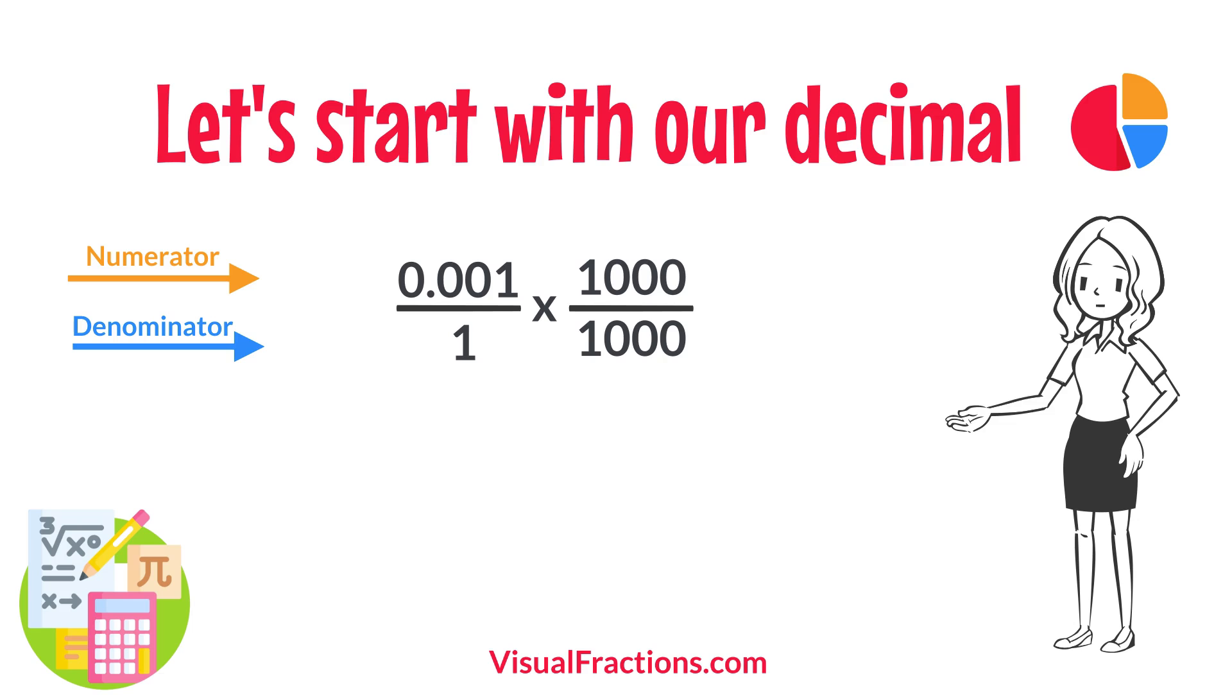So, 0.001 times 1,000 gives us 1, and 1 times 1,000 gives us 1,000. This translates 0.001 to the fraction 1 over 1,000.